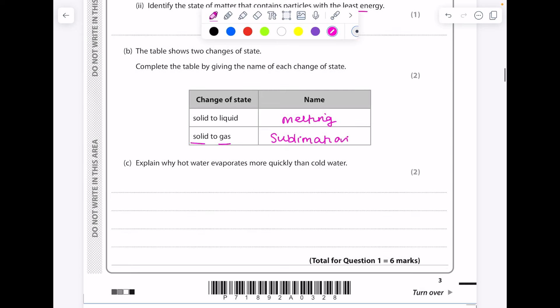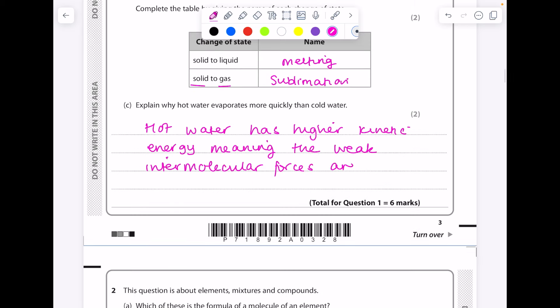Explain why hot water evaporates more quickly than cold water. Hot water has higher kinetic energy, meaning the weak intermolecular forces between the molecules are more easily overcome. So you need to break those intermolecular forces in order for the water to evaporate.